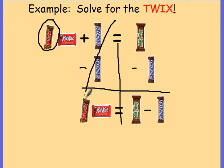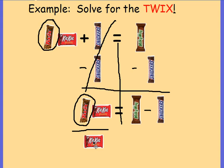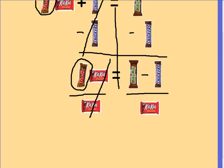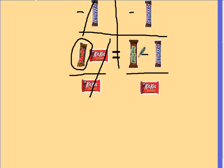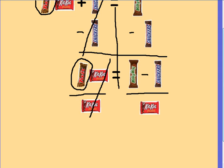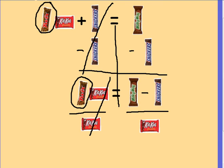Now, focus back on your Twix. It is connected to the Kit Kat by multiplication. So, to undo that, the inverse operation is going to be to divide by a Kit Kat. And I must also do it on the right-hand side. Kit Kats will go away over here. And on the right-hand side, notice we have a Milky Way minus a Snickers divided by a Kit Kat — none of these are like terms, so I'm simply going to rewrite Milky Way minus Snickers divided by Kit Kat.